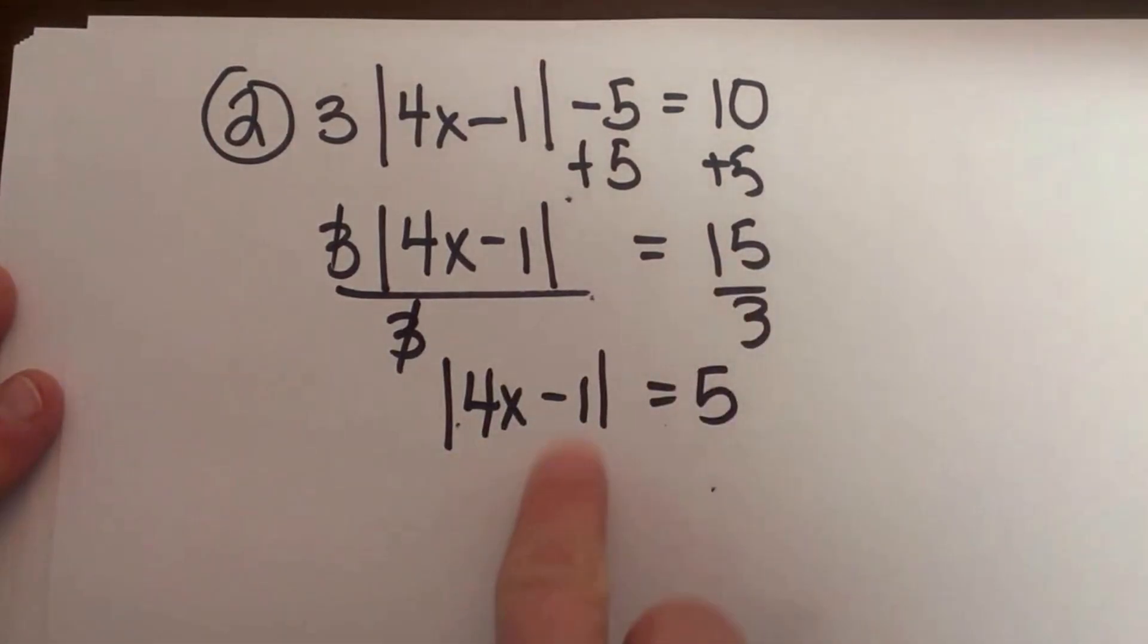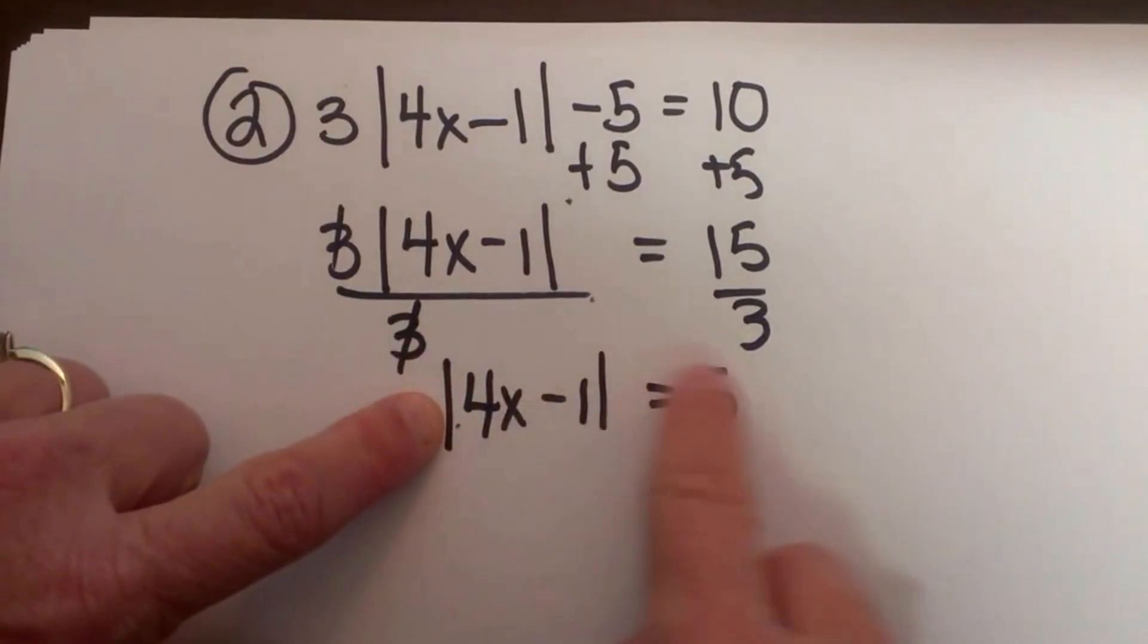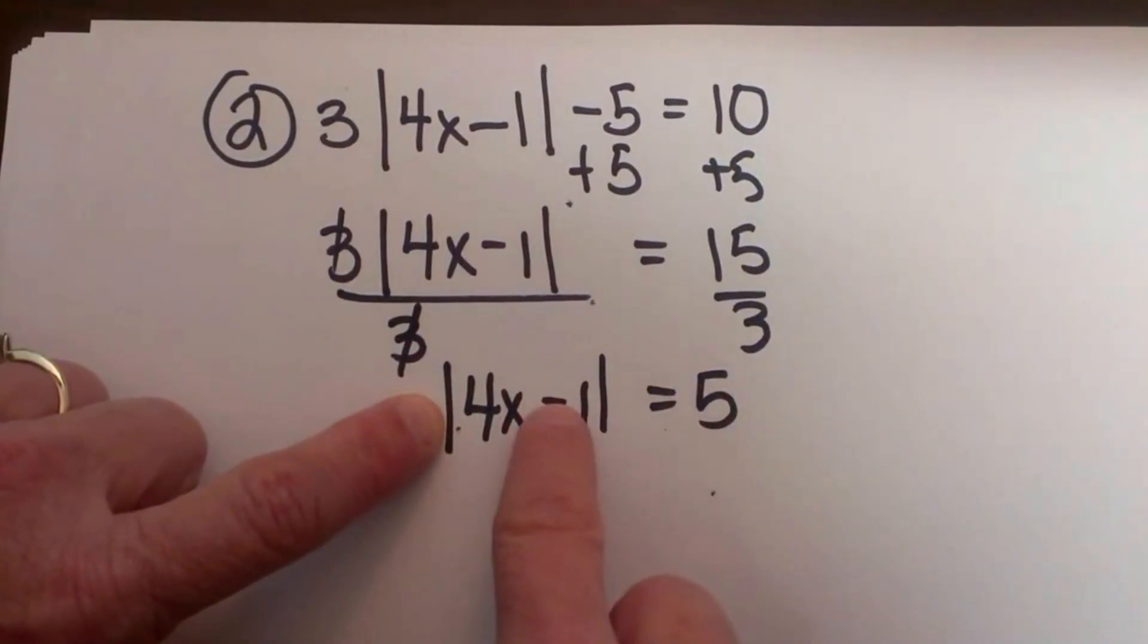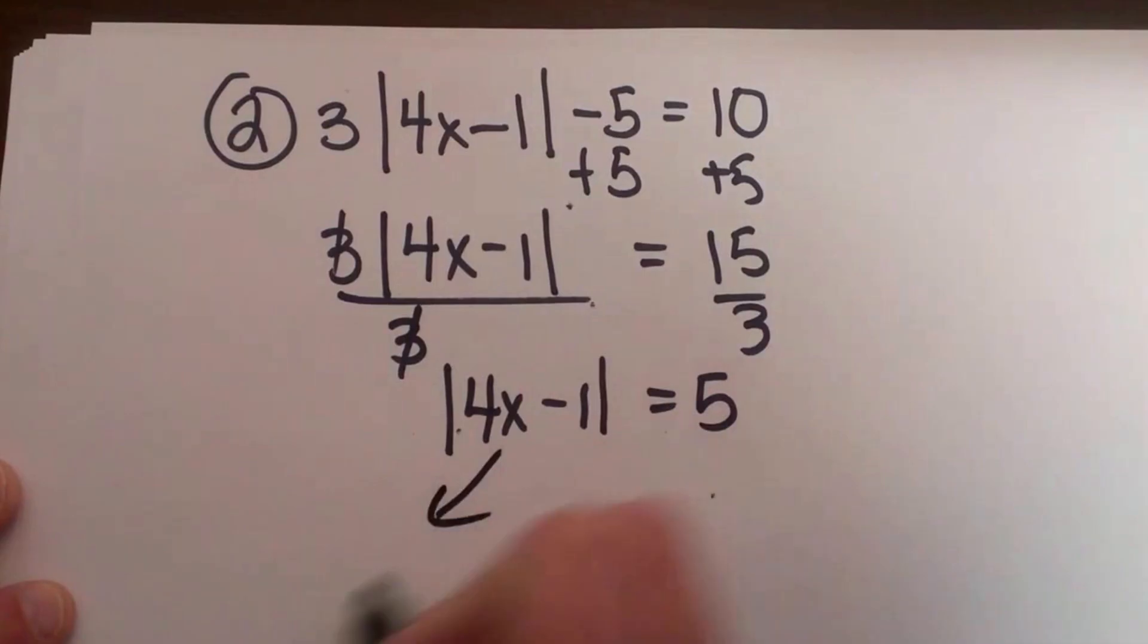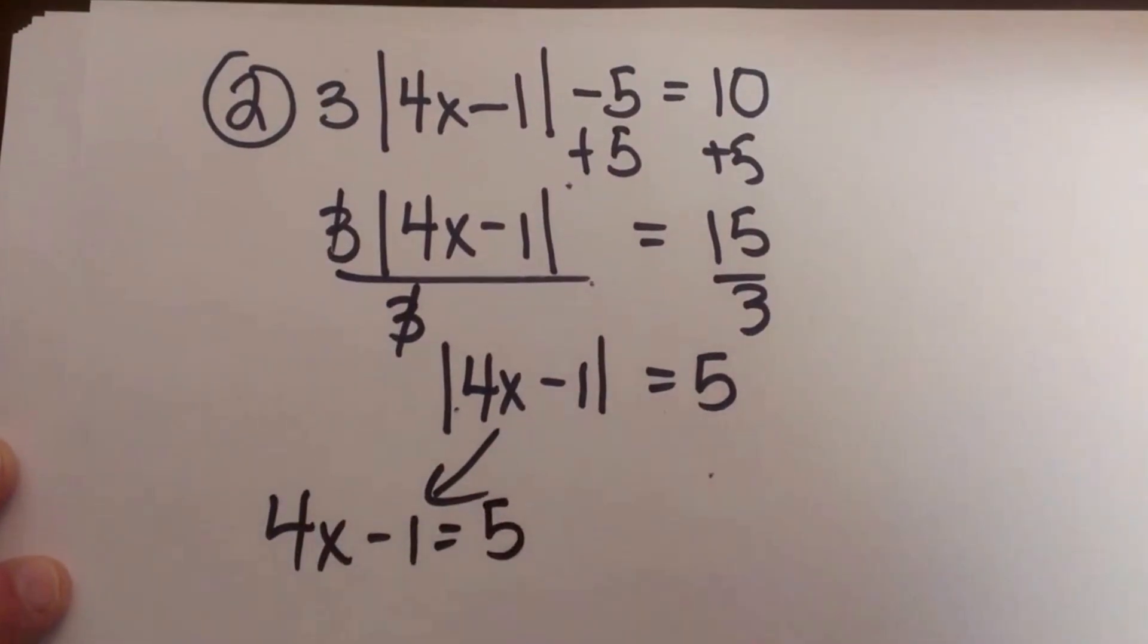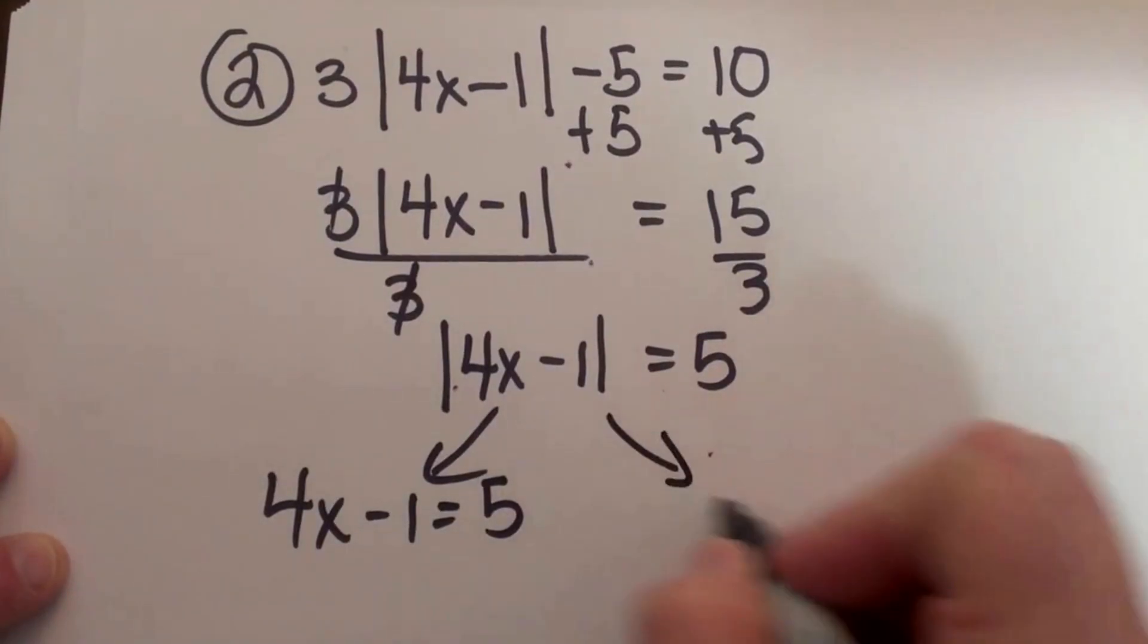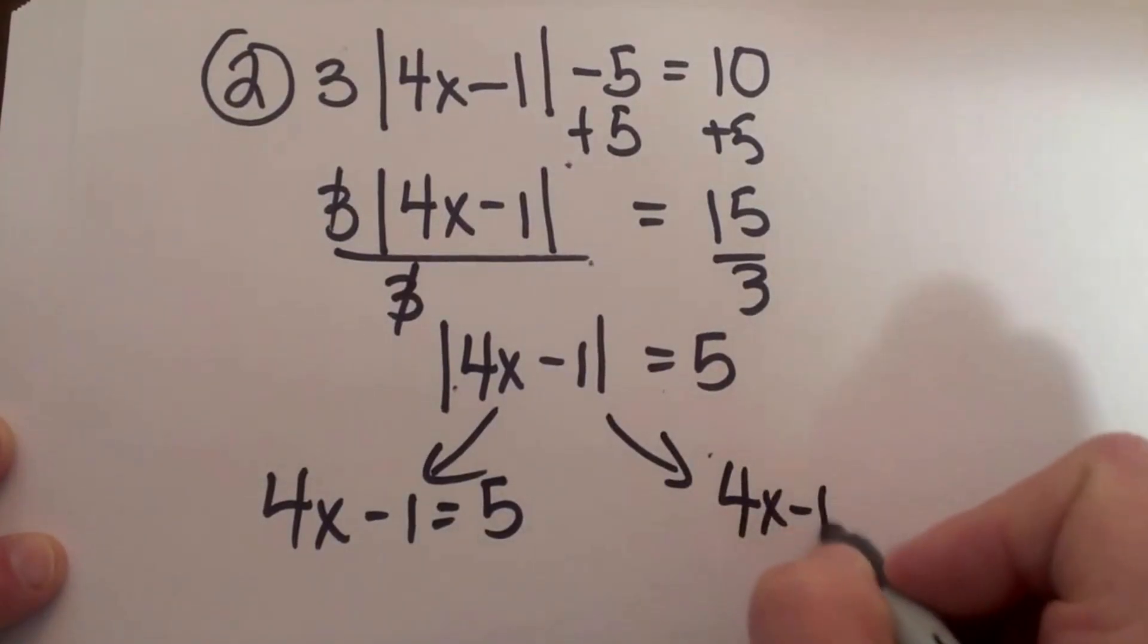Now remember, what is in the absolute value bars can either equal positive 5 or negative 5. So let's set up our two cases. Case 1 is equal to the positive value. Case 2 is equal to the negative value.